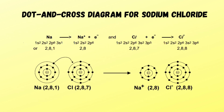Here is the dot and cross diagram for sodium chloride. From sodium, one electron is transferred to chlorine, making it a complete octet. Sodium becomes the sodium ion (Na⁺) and chlorine becomes the chloride ion (Cl⁻). The electrostatic force of attraction between sodium ion and chloride ion leads to an ionic bond.